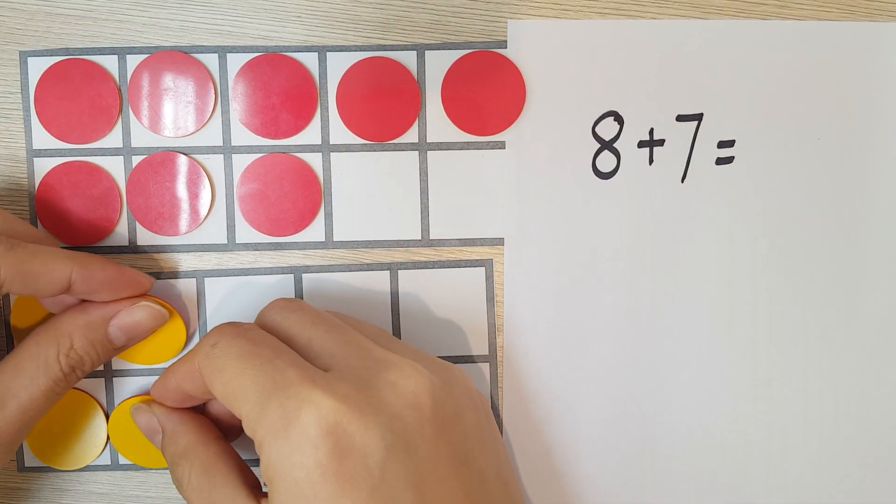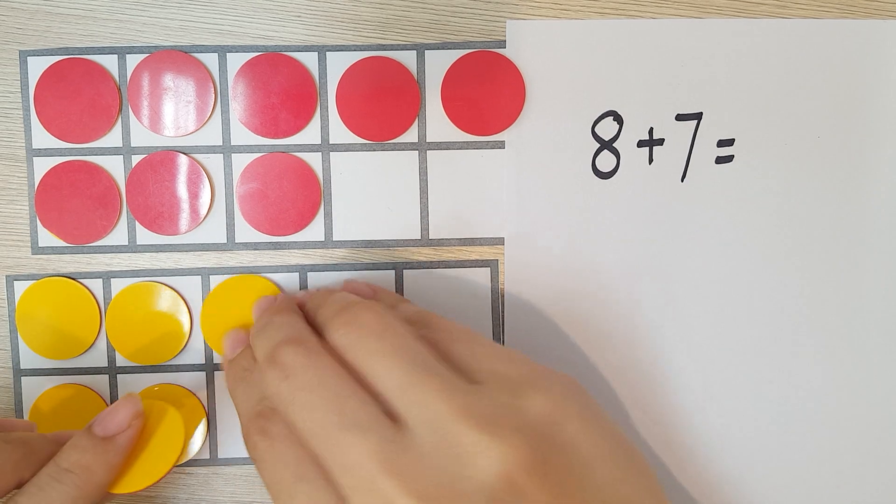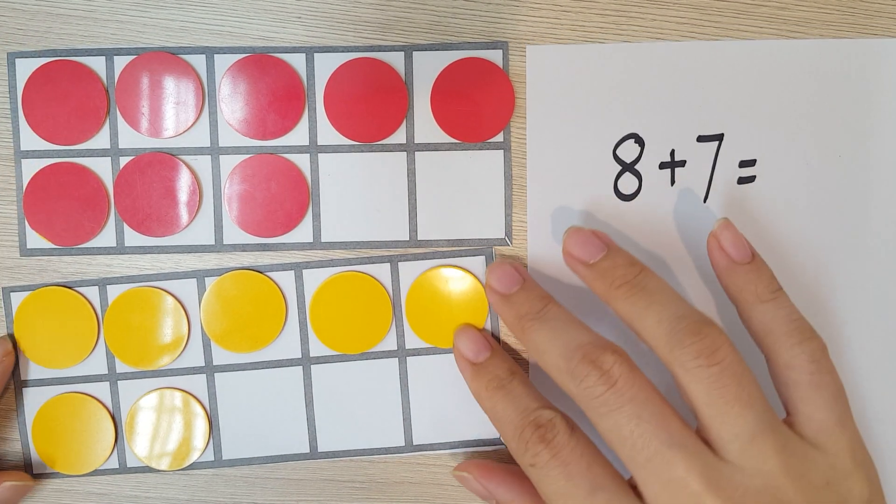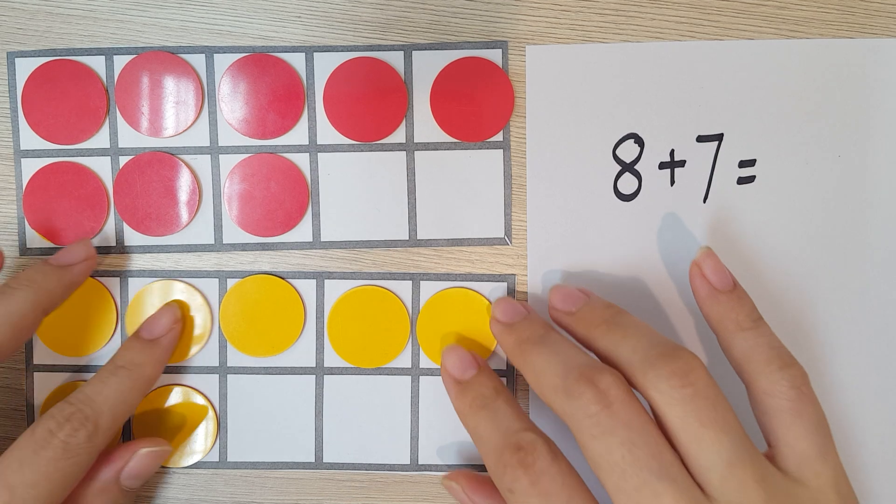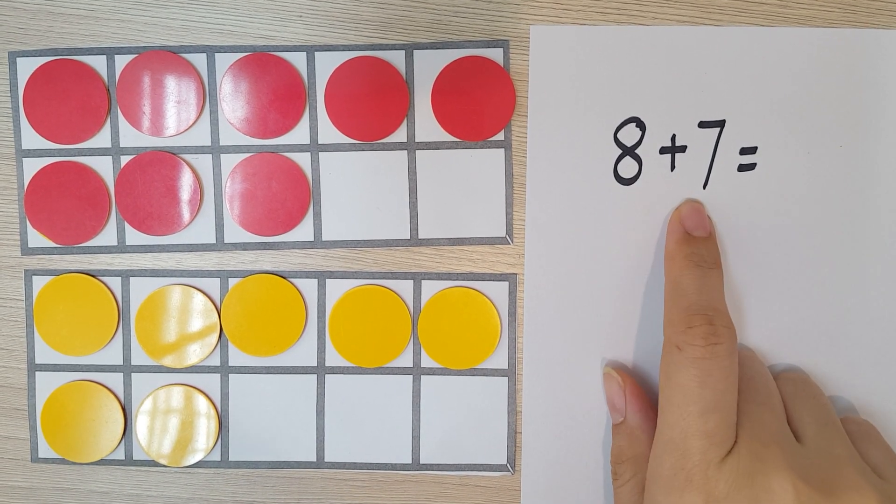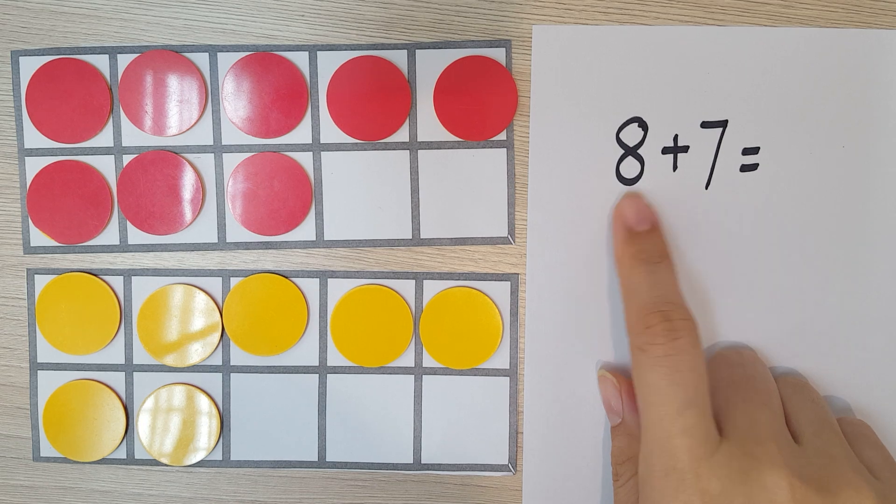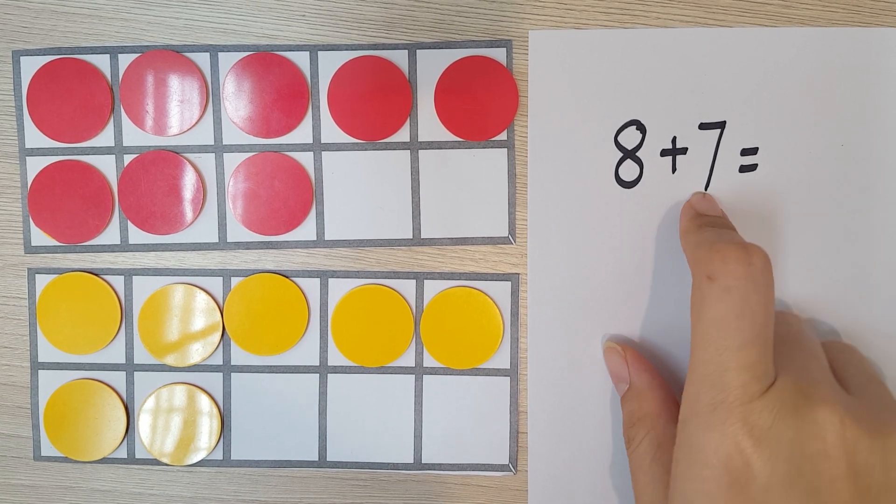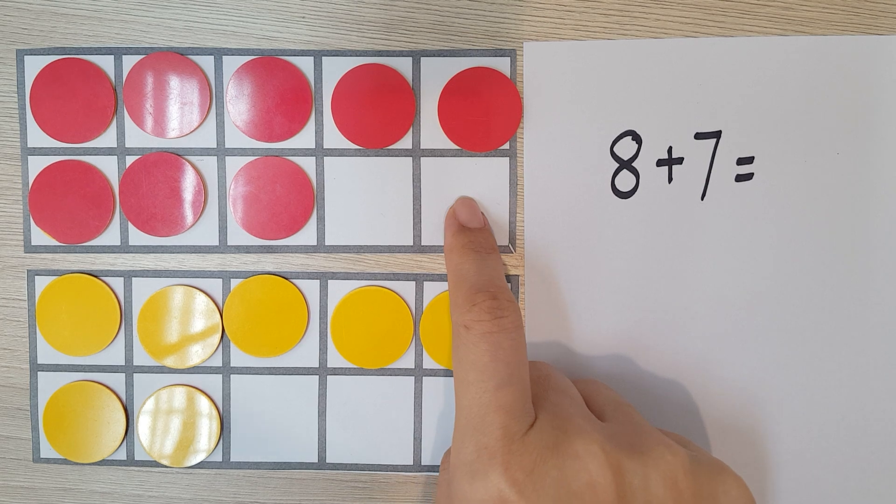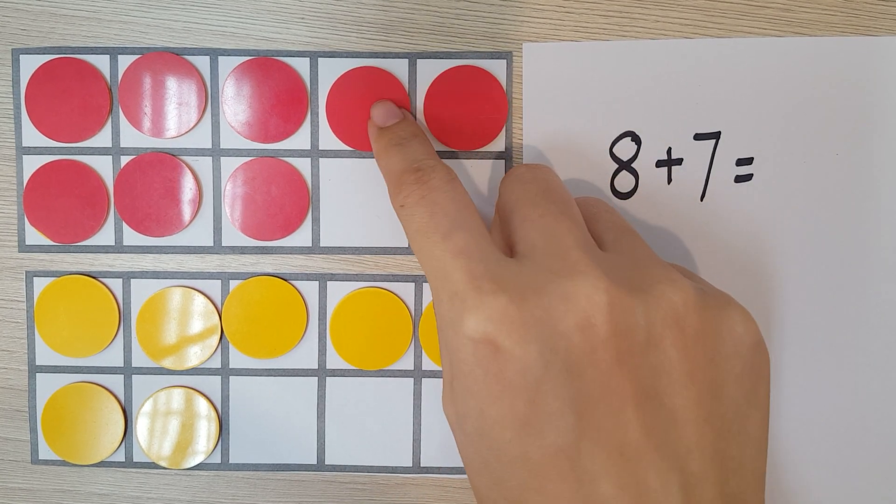And this time I'm going to make them yellow. Okay, so we have here 8 plus 7. Okay, I want to make a 10. So as I look at these two numbers, which number is closer to 10? And we realize that 8 is closer because I just need 2 more to make it to a 10.